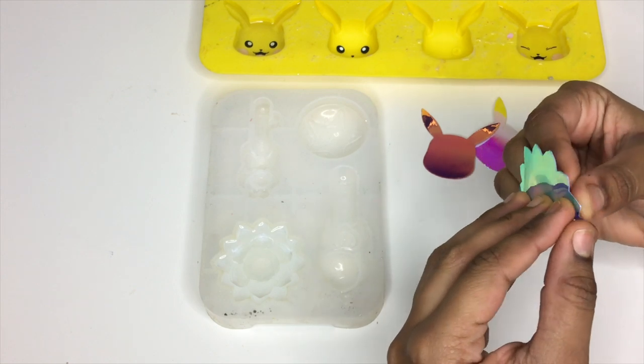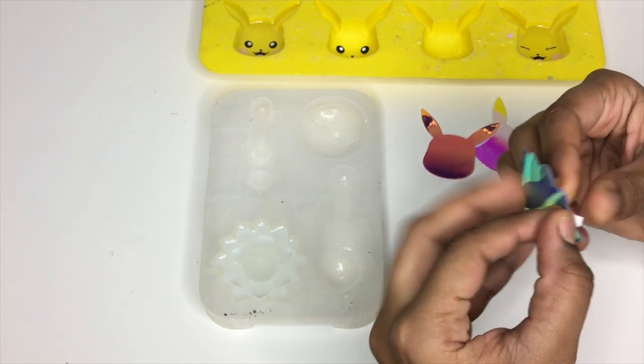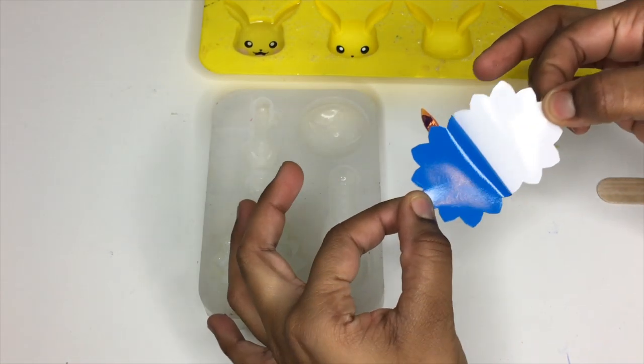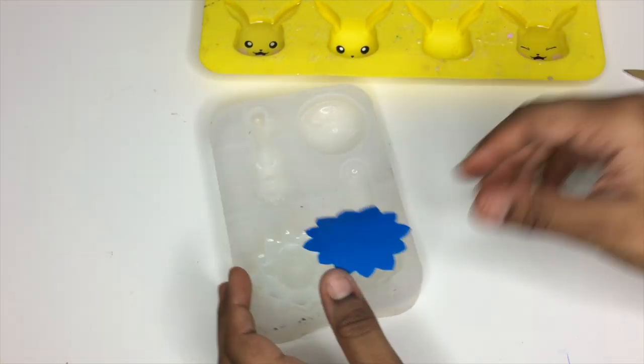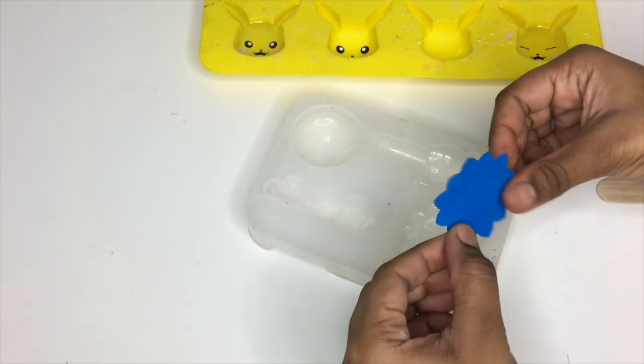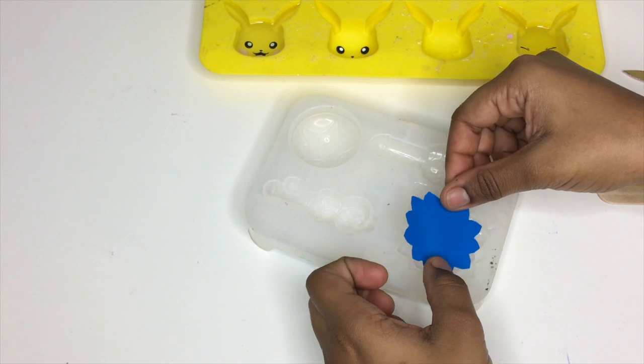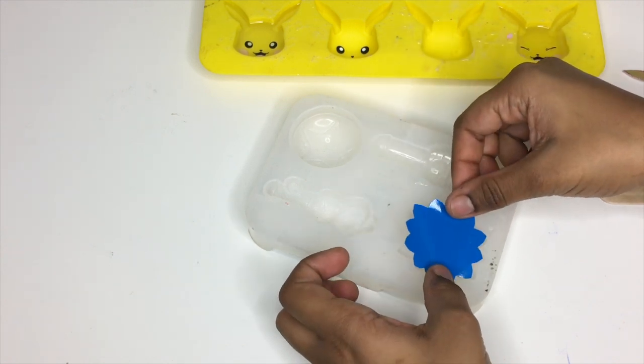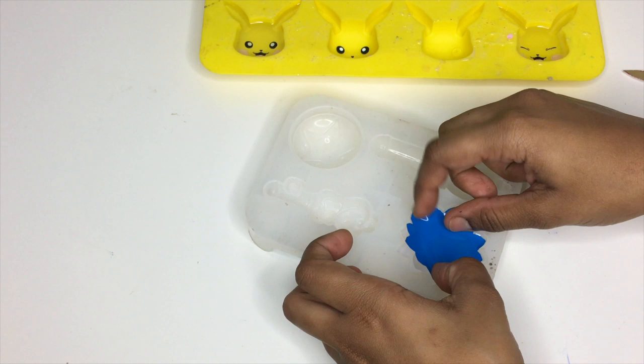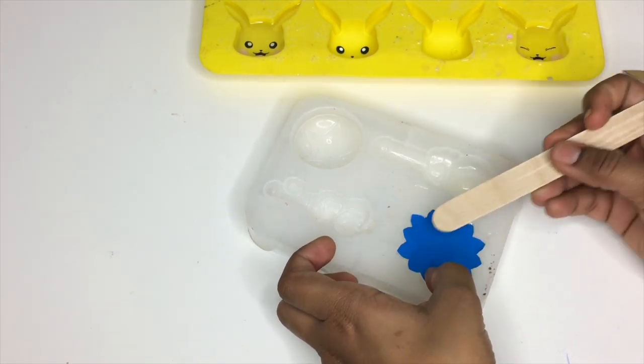Now that I have let the resin harden up for about three and a half hours and the top is mostly dry and a little bit tacky, I'm going to peel the backing of the vinyl and I'm going to place it into the mold. And I'm going to use a popsicle stick to really push it into the mold so that it is on top of the resin.